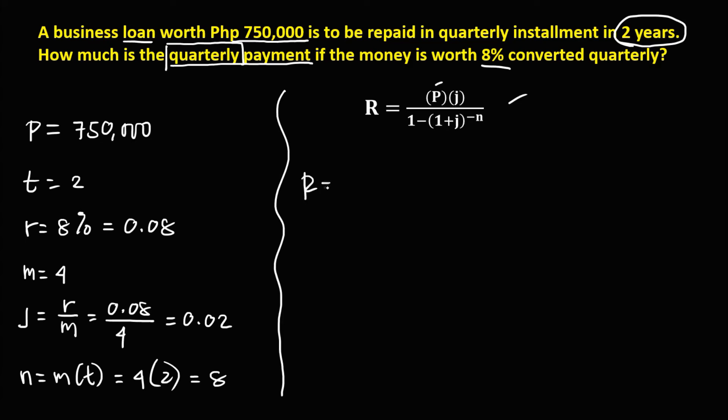So we have R, or the regular payment, equals P, that's 750,000 times J, J is 0.02.